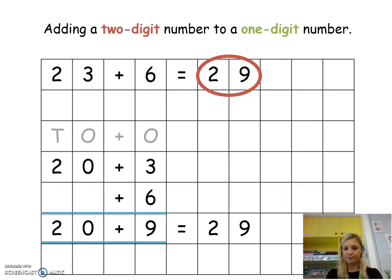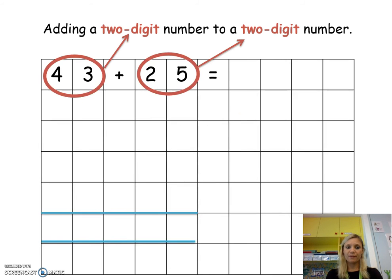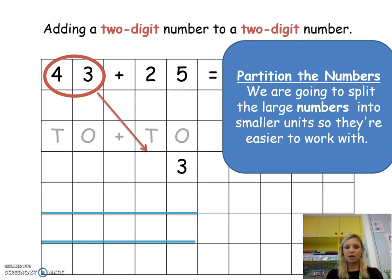Right, next we're going to move on to adding a two-digit number to a two-digit number. So we've got here 43 plus 25. They are both two-digit numbers, so again we're going to partition the numbers.